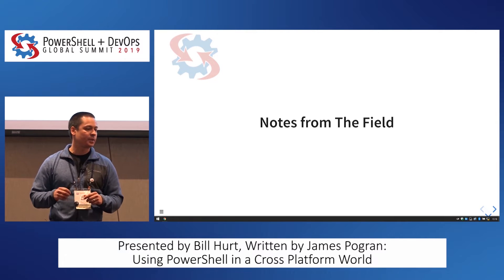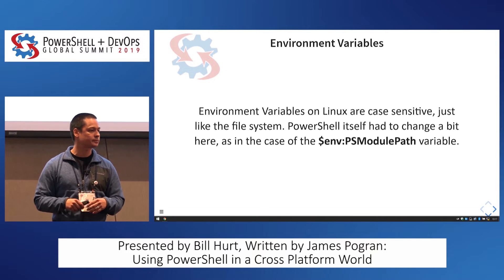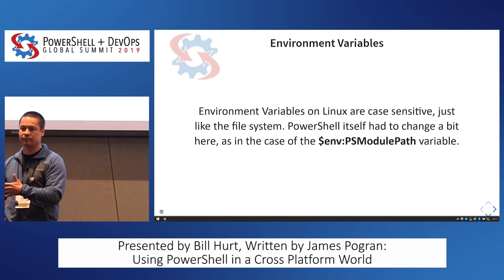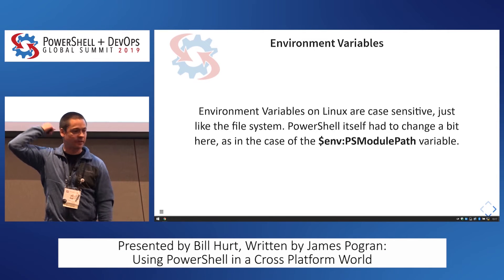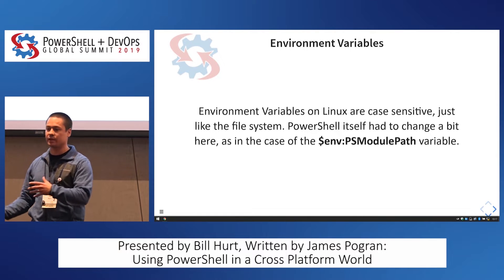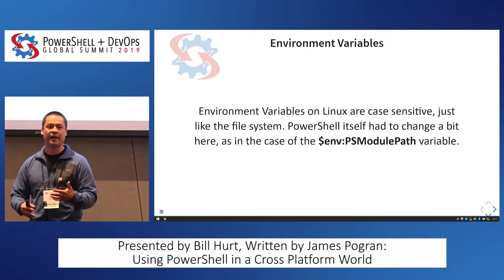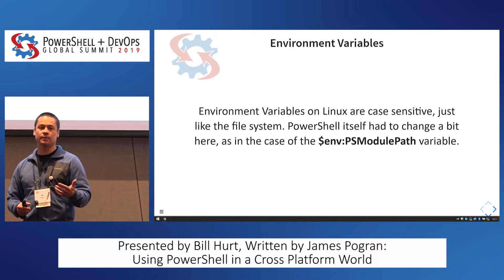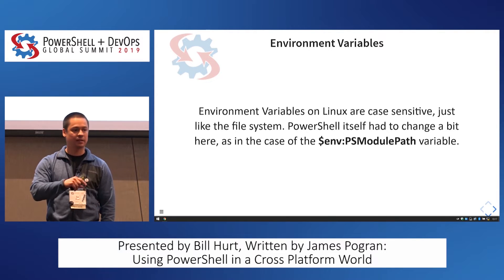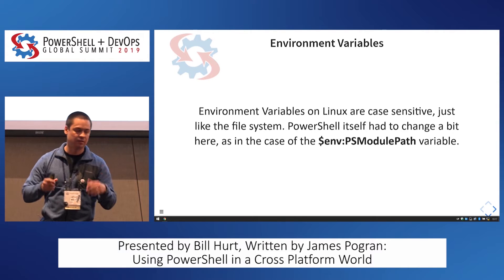Here are gotchas we've stubbed our toes on moving to Linux. Environment variables on Linux are all uppercase by default, and they are case-sensitive — unlike on Windows. If you iterate over the environment drive in PowerShell on Linux, you'll see they're all uppercase except for one special case that uses camel case. People were moving scripts and getting nulls because they missed the case sensitivity. The PowerShell team decided there was enough of this happening that they'd do camel case on Linux for that one, just to avoid all these pedantic little edits.